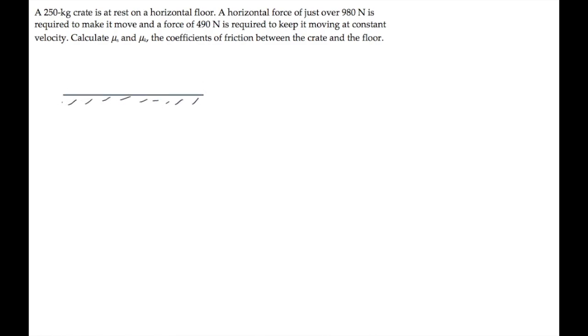The crate in this problem is at rest on a horizontal floor. It has a mass of 250 kilograms. When someone pushes on it with a force P, static friction pushes back in the opposite direction just as hard, so that the crate doesn't move. We're told how hard a person has to push to finally make it move, and then how hard they have to push to keep it moving at a constant velocity, and we're asked to find the coefficients of friction.